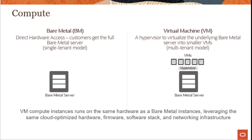Here is a pictorial representation of compute-level isolation. On the left-hand side, a bare metal server provides direct hardware access — the customer has full control in a single-tenant model where no other customer is using that physical server; it completely belongs to the subscribing customer. On the right-hand side, we have the virtual machine model. These virtual machines run on the same physical hardware used for bare metal service, making it a multi-tenant model where multiple customers may utilize the same bare metal server, but the virtual machines are fully isolated.